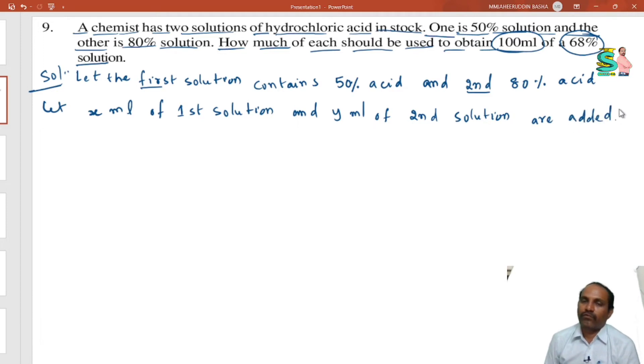We do not know how much taken first solution and how much taken second solution. That is why we took here first solution x ml and second solution y ml. We need 100 ml. That is why sum of these two is x plus y. This sum of two solutions is 100 ml, already given 100 ml.